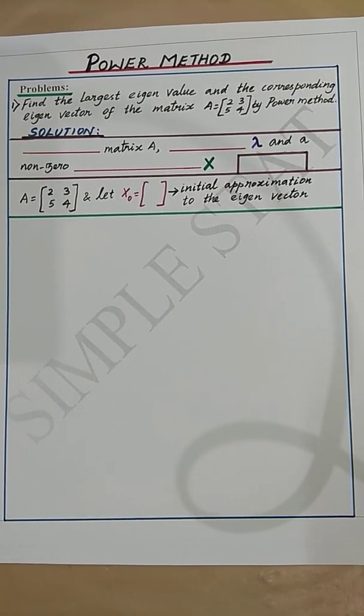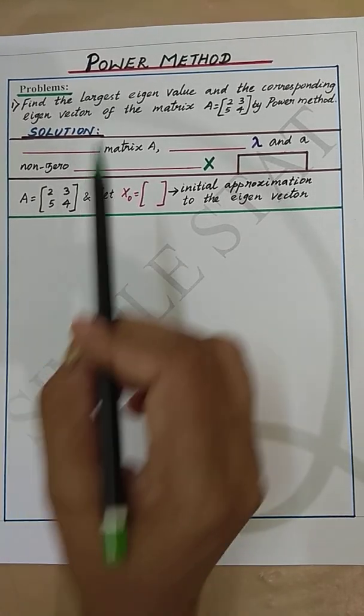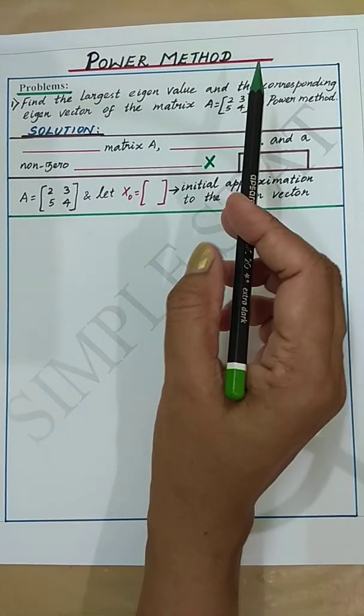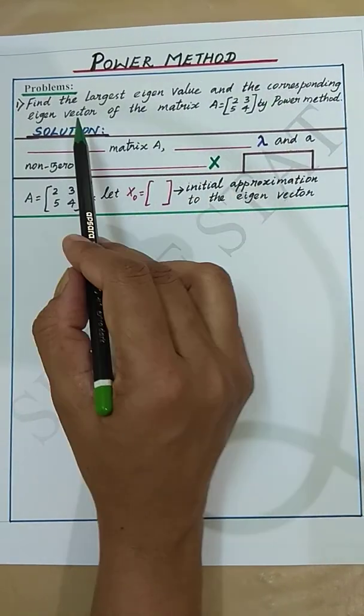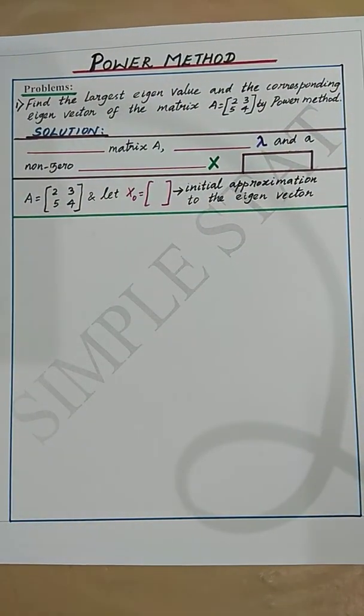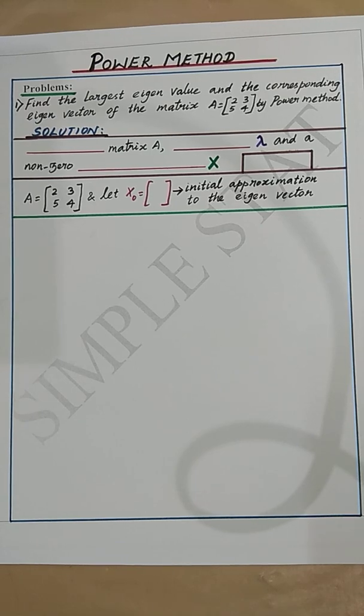Power method. An iterative procedure used to find numerically the largest eigenvalue and the corresponding eigenvector of a square matrix is known as power method.